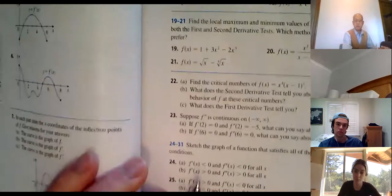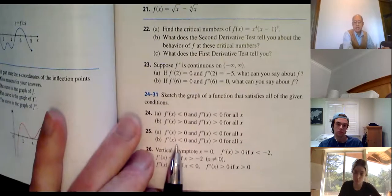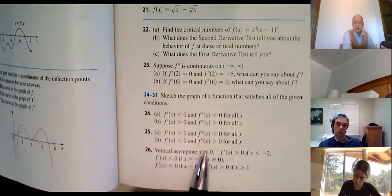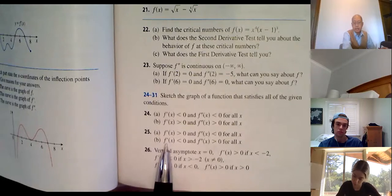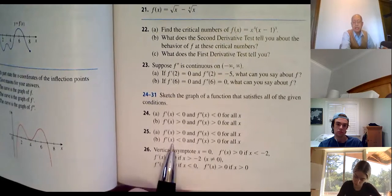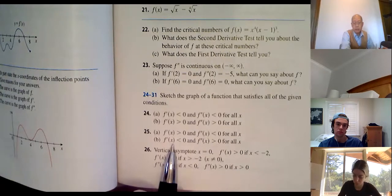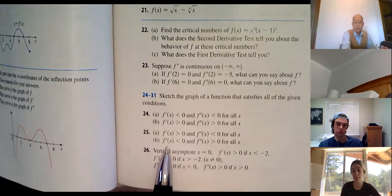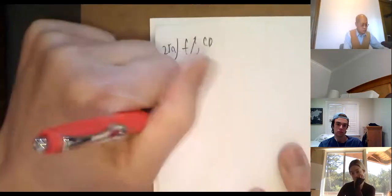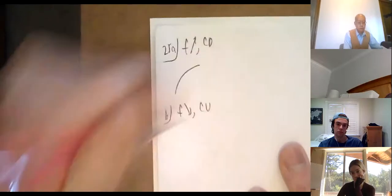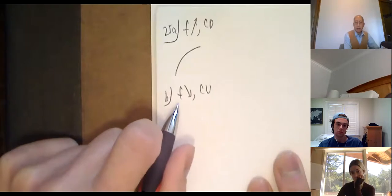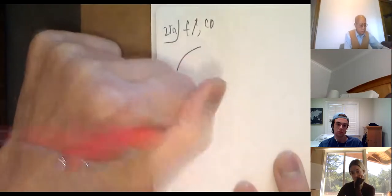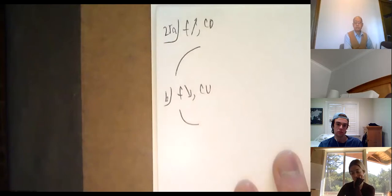Part b: f′ < 0 and f″ > 0. f′ < 0 means decreasing, f″ > 0 means concave up. So a decreasing, concave-up curve — going down in a U shape.